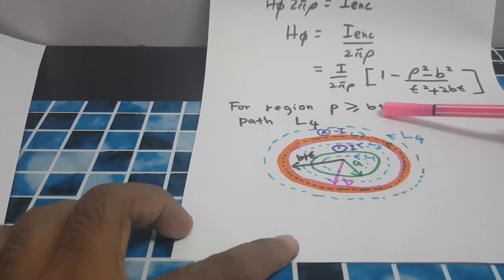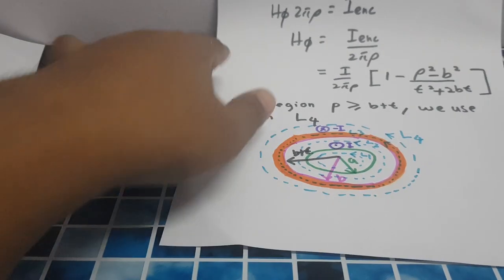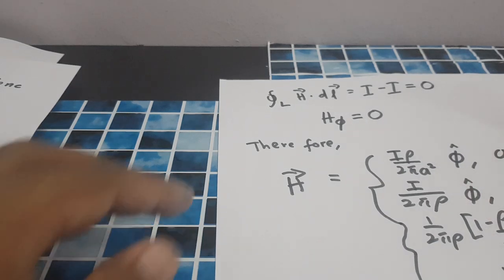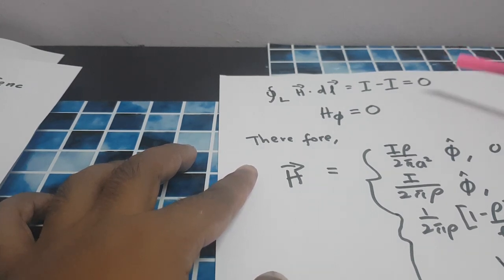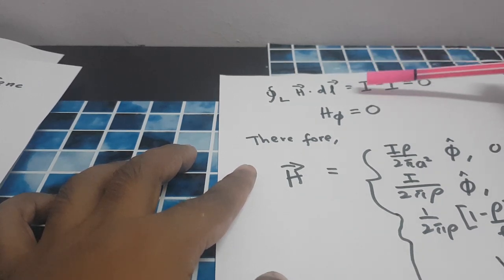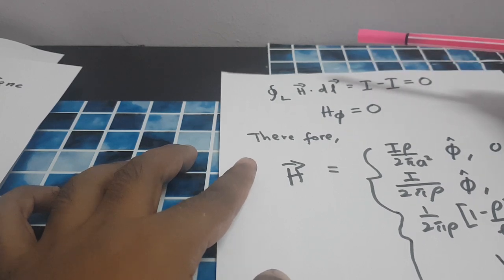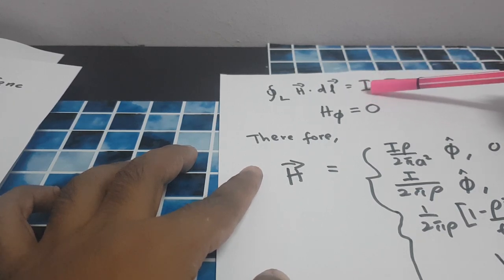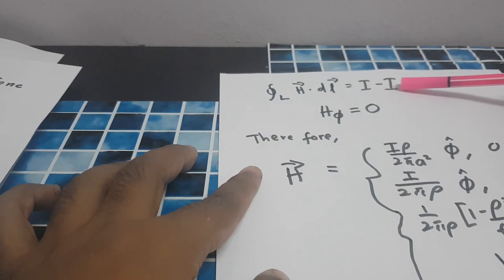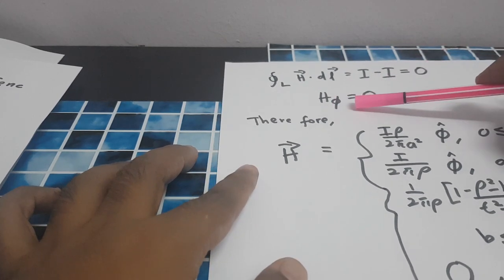For the region ρ greater than B+T, we use Amperian path L4. At L4, the current I flows in the negative z-direction through the outer conductor. The current between radius A and B (out of the page) is +I, and the current through the outer conductor thickness is −I. So I plus (−I) equals 0, which means H_φ equals 0.